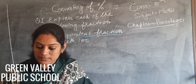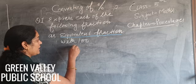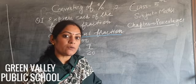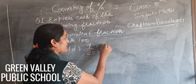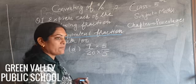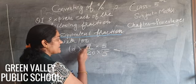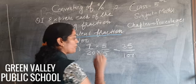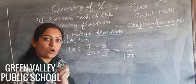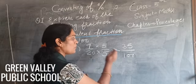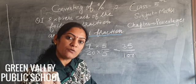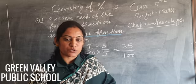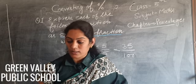Now the D part of question 1 is 7/20. We convert 20 into 100 — we multiply by 5. So 7 × 5 = 35 and 20 × 5 = 100, giving us 35/100. So 7/20 is converted to the equivalent fraction 35/100 with 100 as denominator. That was the first question of exercise one.